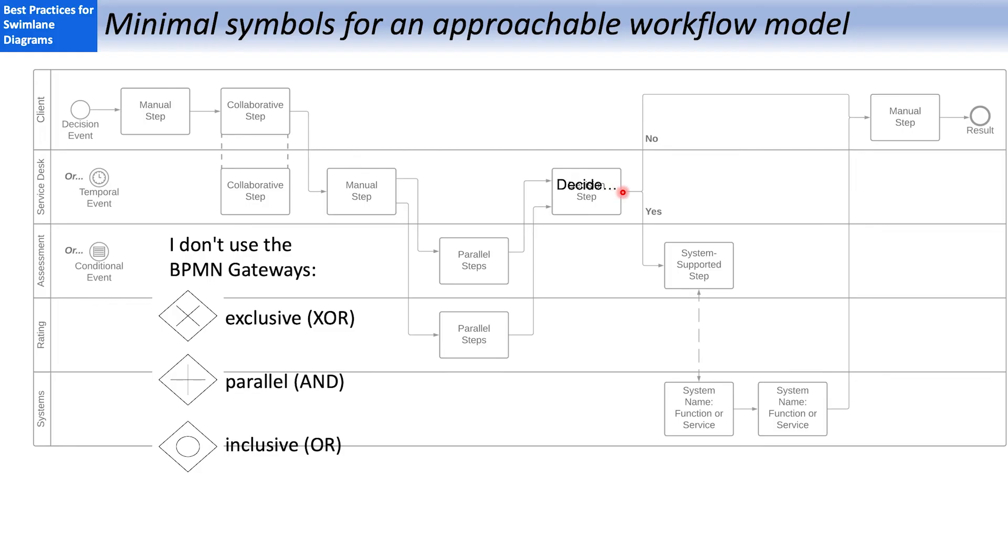I'm going to use the verb 'decide' and my flow line is going to split. It's like coming to a fork in the road. I can go left or I can go right, but I can't go either. So no business person has trouble realizing that that is a decision. I could add the exclusive gateway, but I don't think it's particularly helpful. Similarly, over here, I have some parallel steps with parallel flows going into them,